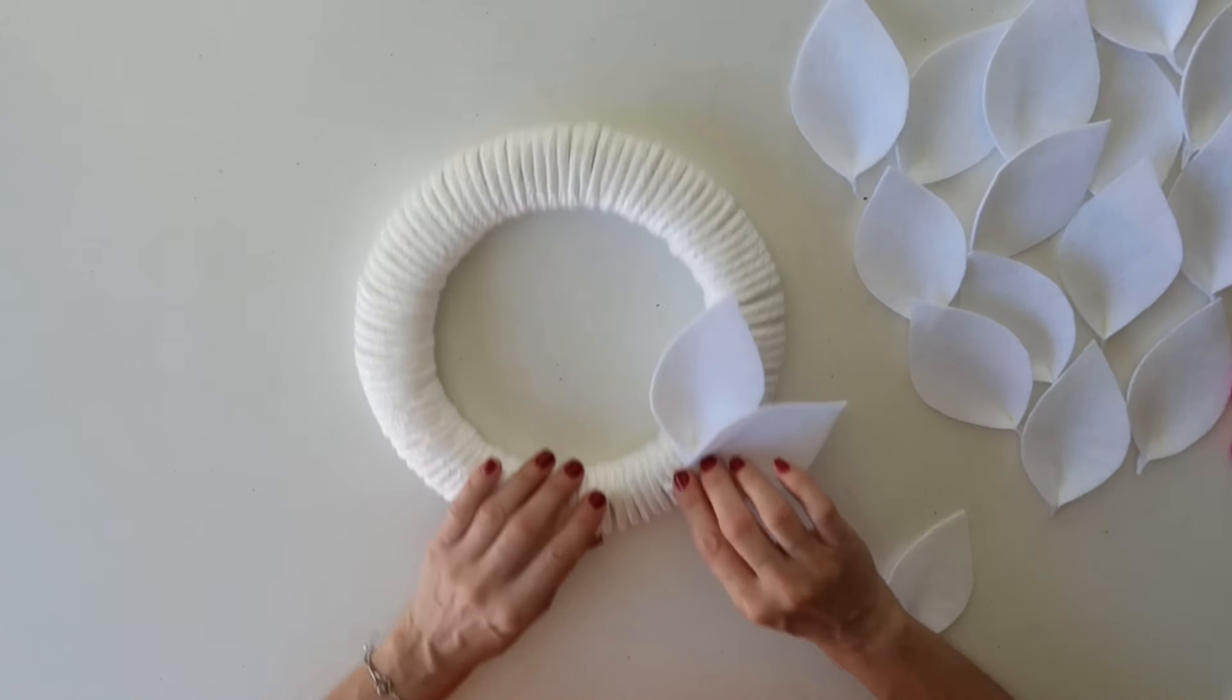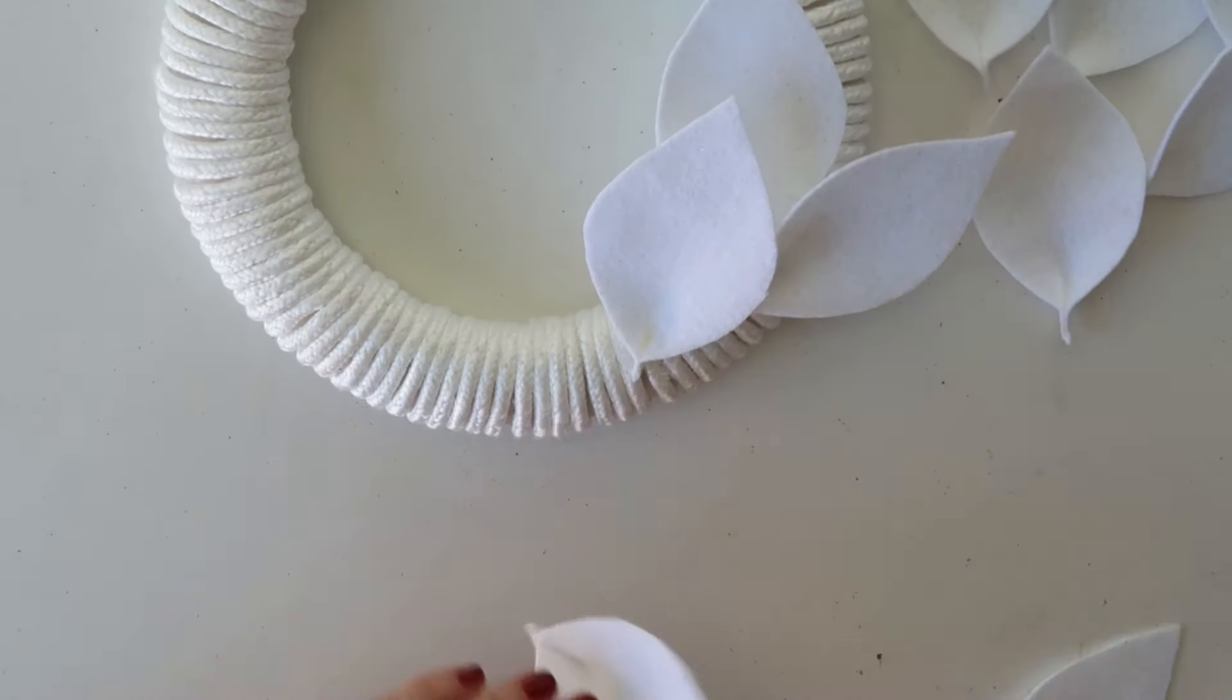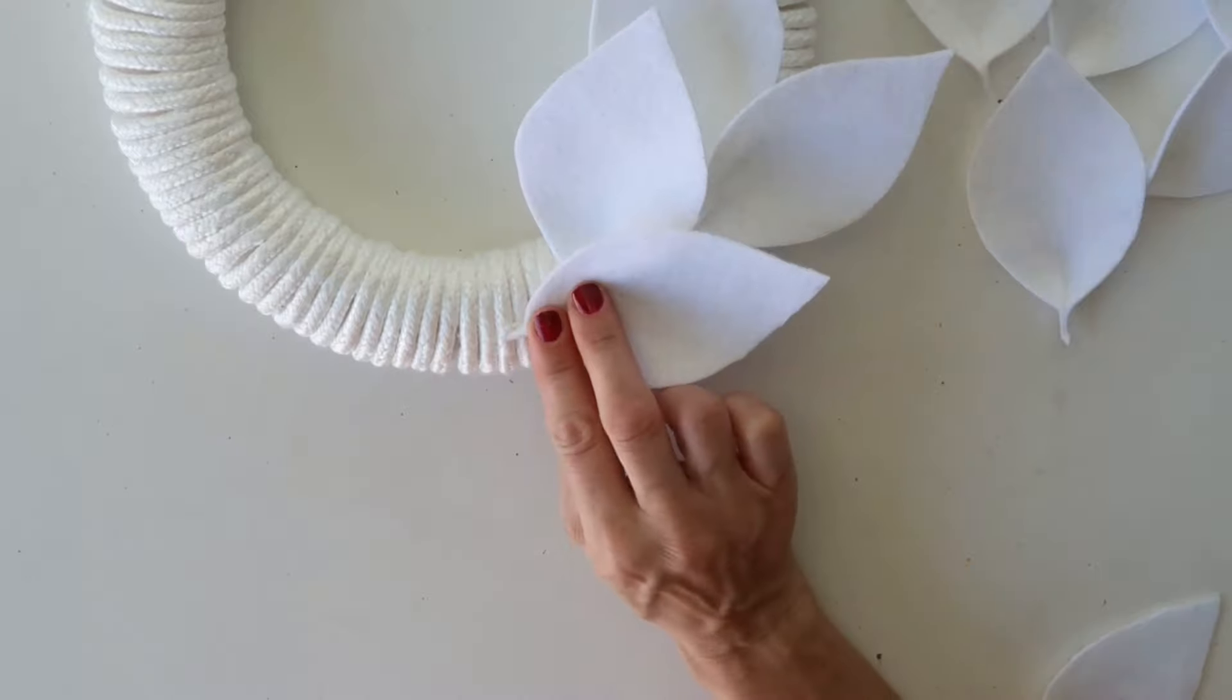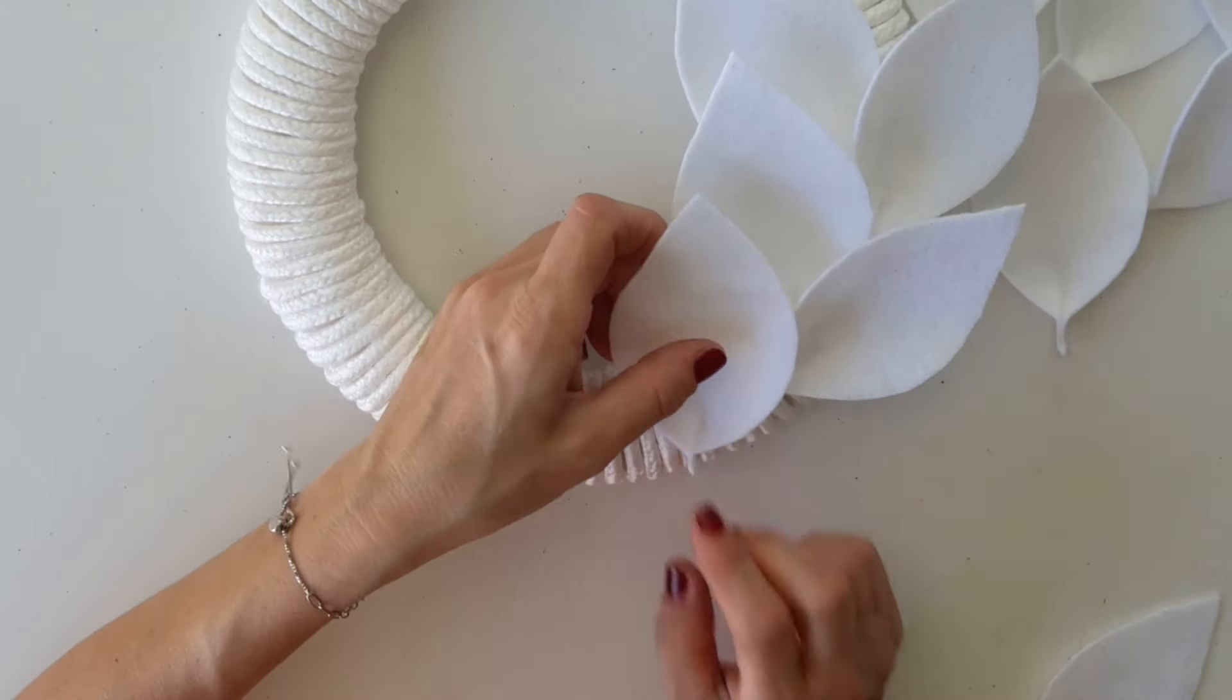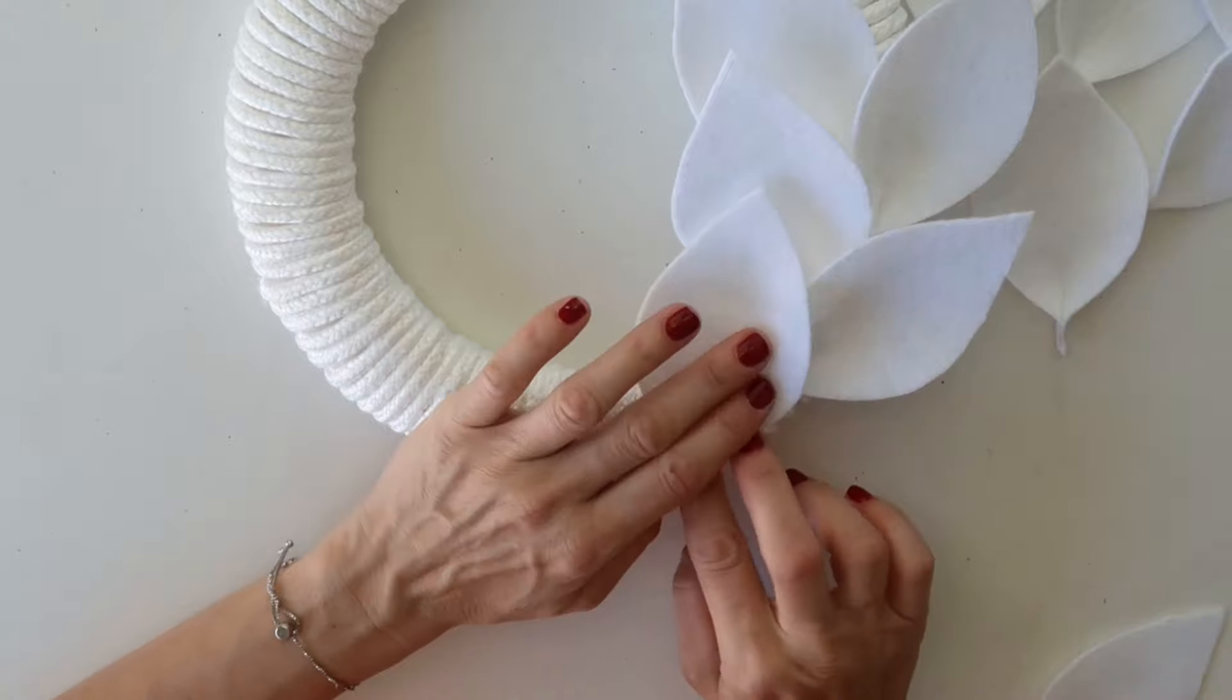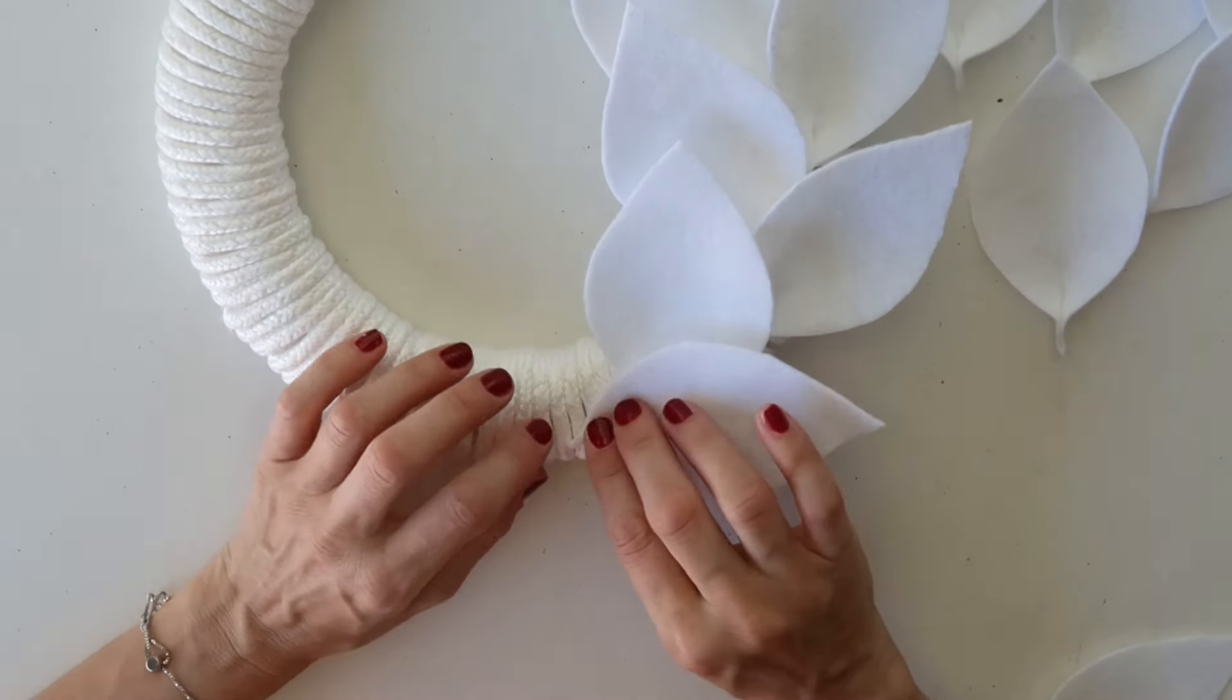So I'm just adding a little dab of hot glue on the portion that I pinched, so on the back of it on a stem. And I am alternating putting one leaf toward the inside of the wreath and one towards the outside. What I ended up doing, I only did one side of the wreath, so the right side is covered in these leaves and I left the left side blank.